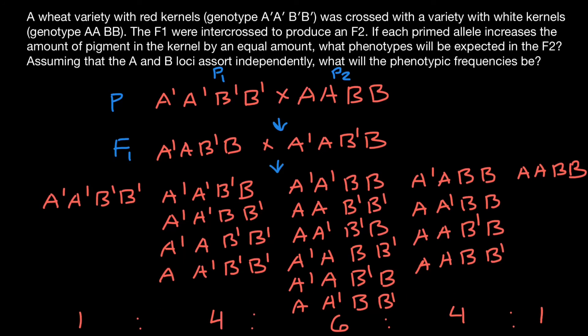And our answer is going to be one phenotype would have red kernels. Four out of 16 would have dark pink kernels. Six would have pink kernels. Four out of 16 would have light pink kernels. And one out of 16 would have white kernels.